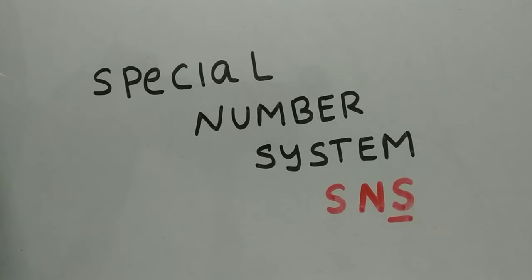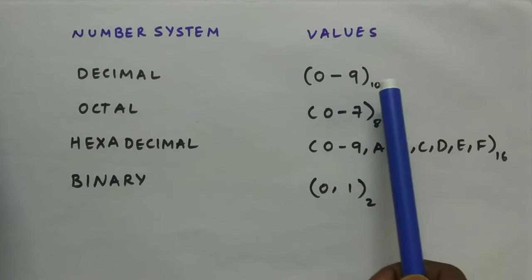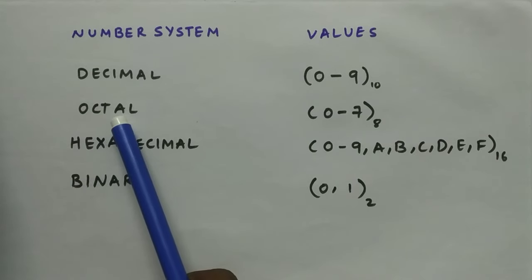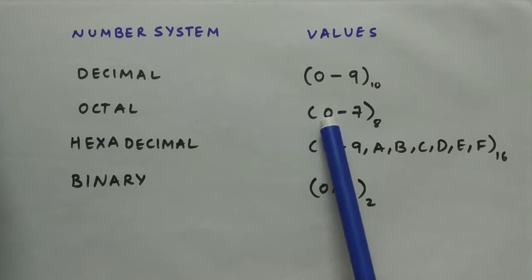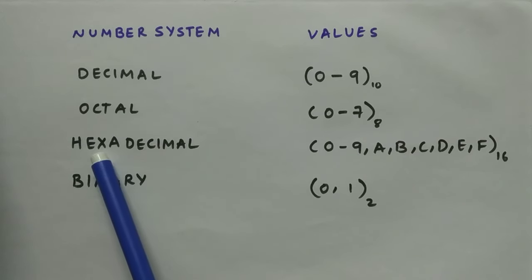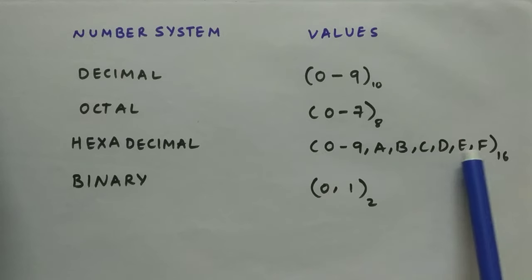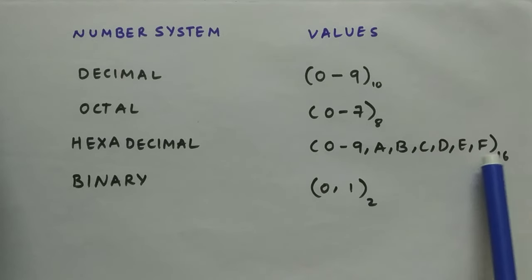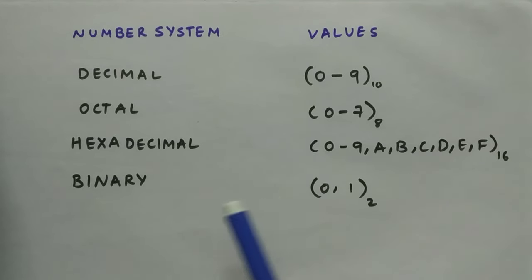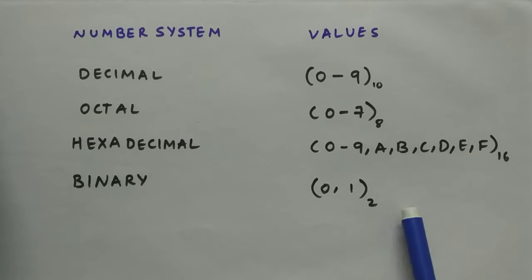So what's special about this special number system? We have different types of number systems. We have the decimal number system from 0 to 9 with base 10. We have the octal number system from 0 to 7 with base 8. We have the hexadecimal number system with values 0 to 9 and A, B, C, D, E, F — representing 10 to 15 — with base 16. We also have binary, with values 0 and 1, and base 2.